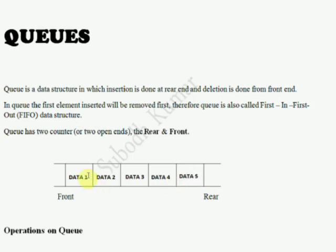The first data is removed from the front side: data 1, then data 2, then data 3, then data 4, then data 5. And if there is a new element, it will be inserted from the rear side.